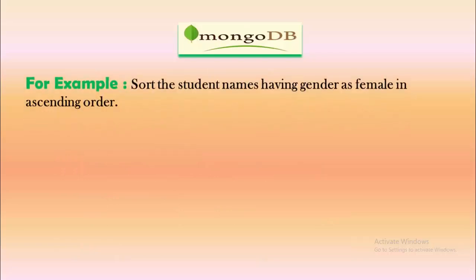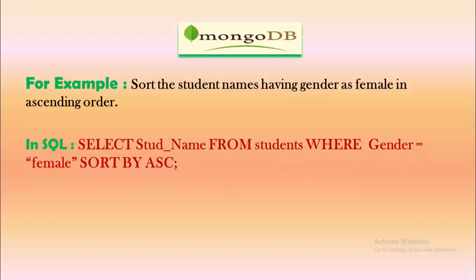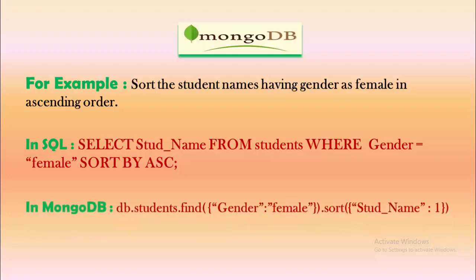For example, suppose we want to sort student names having gender as female in ascending order. In SQL, the query would be: SELECT student_name FROM students WHERE gender = 'female' ORDER BY student_name ASC. The equivalent MongoDB query is db.students.find({gender: 'female'}).sort({studentName: 1}), which sorts all documents in ascending order by student name where gender is female.